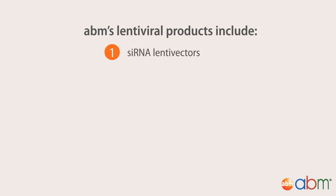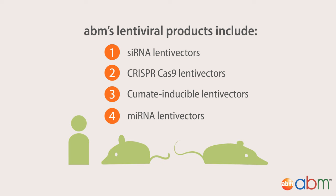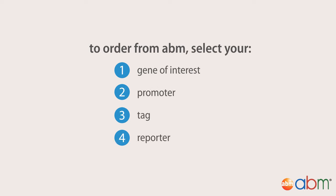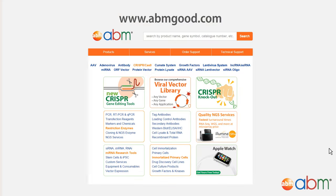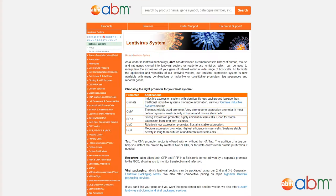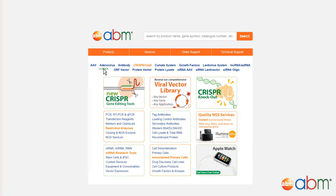From siRNA lentivectors to CRISPR-Cas9 lentivectors to chemically-inducible lentivectors, our lentiviral vectors and ready-to-use lentiviruses can be used to manipulate gene expression of any human, mouse, or rat gene. Simply select your gene of interest as well as a promoter, tag, and/or reporter, and we will package it for you at the titer you desire. Check in with our store at www.abmgood.com and explore our catalogue of lentivirus products and services today.